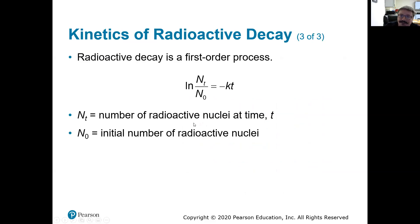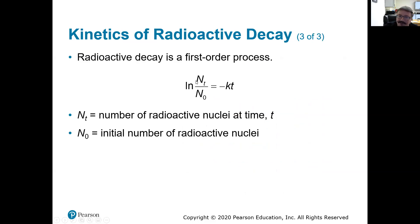Radioactive decay is a first-order process. This is really just the integrated rate law for first-order reactions rewritten in a slightly different form. N₀ would be 100% of your starting isotope and Nₜ would be the amount at some time t. You take the natural log of that ratio, and if you know the rate constant you can find the time; if you know the time and the isotope ratio you can find the rate constant; or if you know the rate constant and the time you can find how much material remains.